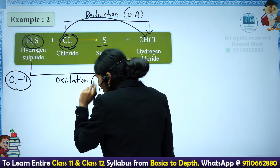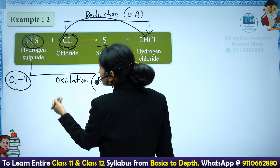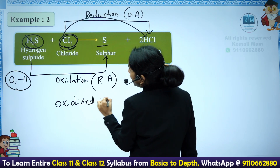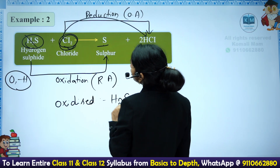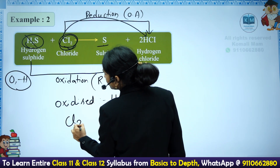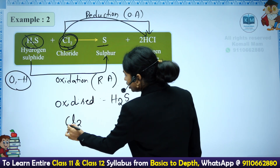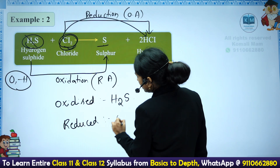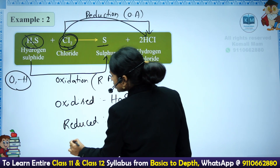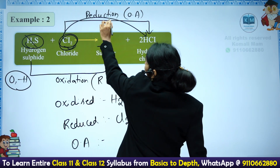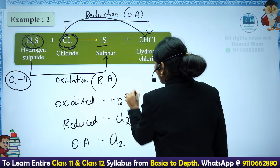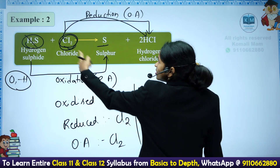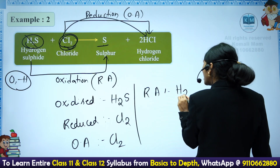If they ask which compound is oxidized — H2S is oxidized. If they ask which is reduced — Cl2. If they ask which is the oxidizing agent — the one undergoing reduction — that is Cl2. If they ask which is the reducing agent — the one undergoing oxidation — that is H2S. That's it, my dear students. Simply, you can solve any kind of questions.